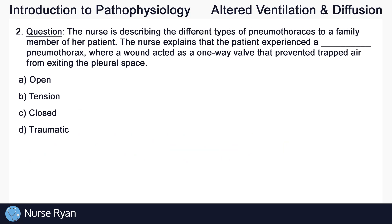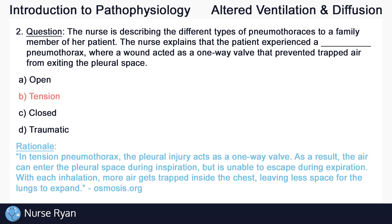Question number two. The nurse is describing the different types of pneumothoraces to a family member of her patient. The nurse explains that the patient experienced a blank pneumothorax, where a wound acted as a one-way valve that prevented trapped air from exiting the pleural space. The answer is B: tension pneumothorax. In tension pneumothorax, the pleural injury acts as a one-way valve. As a result, air can enter the pleural space during inspiration but is unable to escape during expiration. With each inhalation, more air gets trapped inside the chest, leaving less space for the lungs to expand.